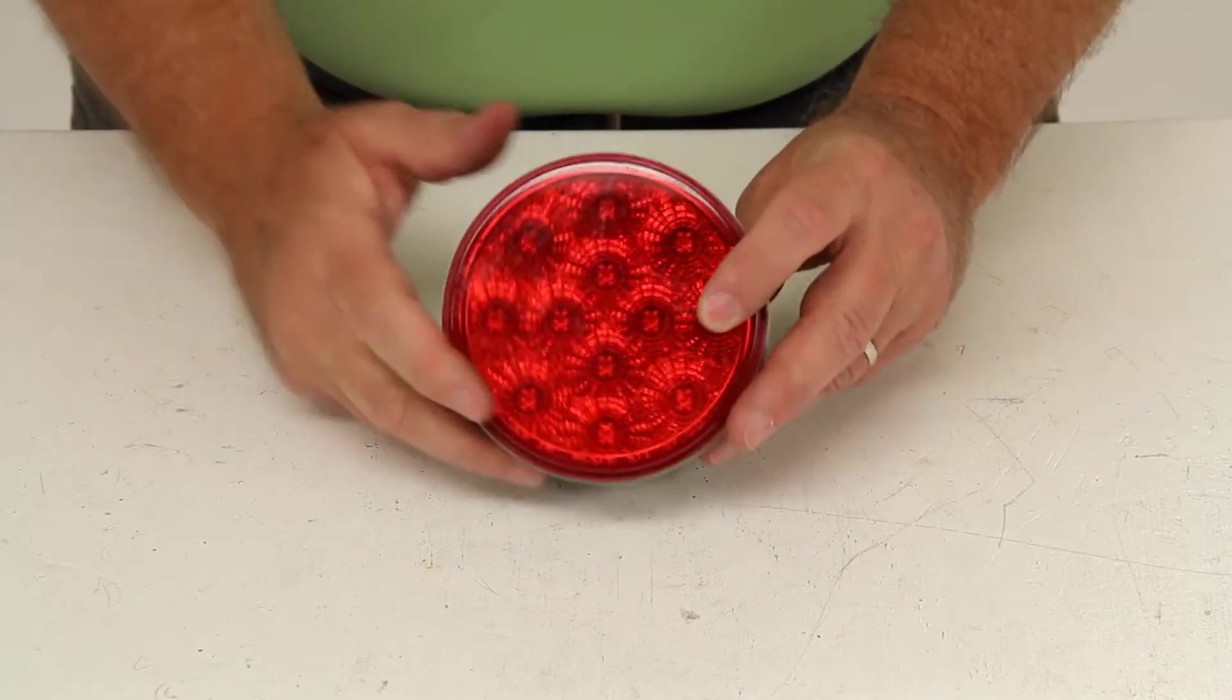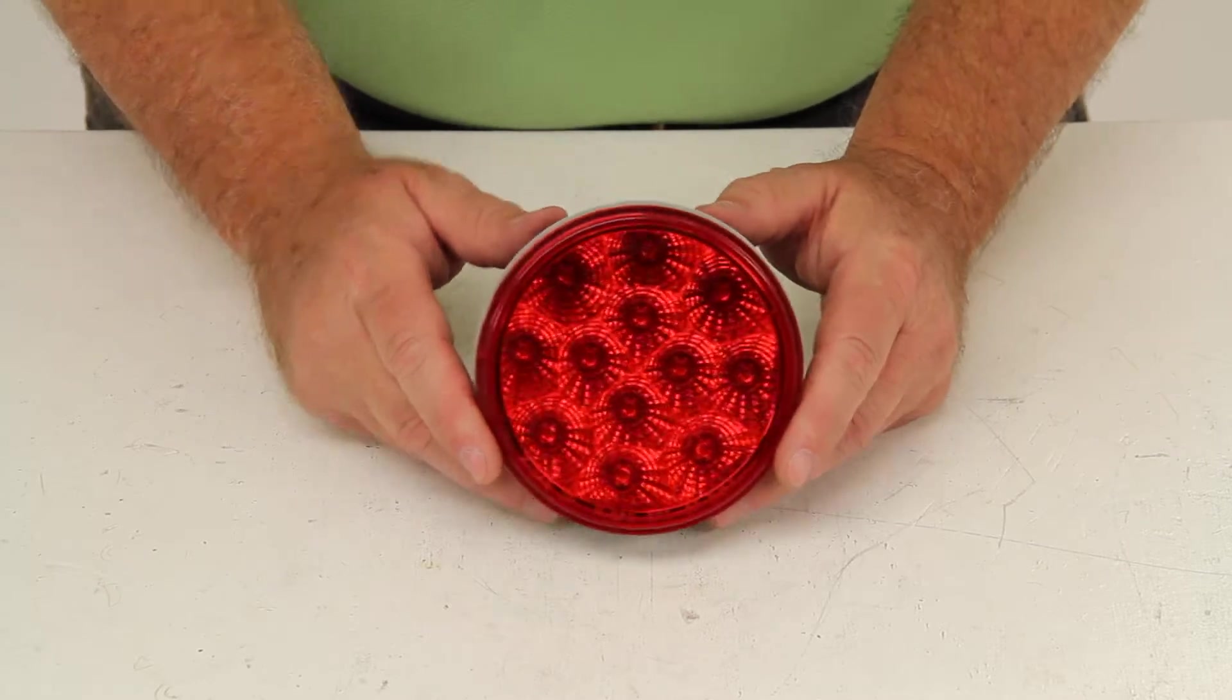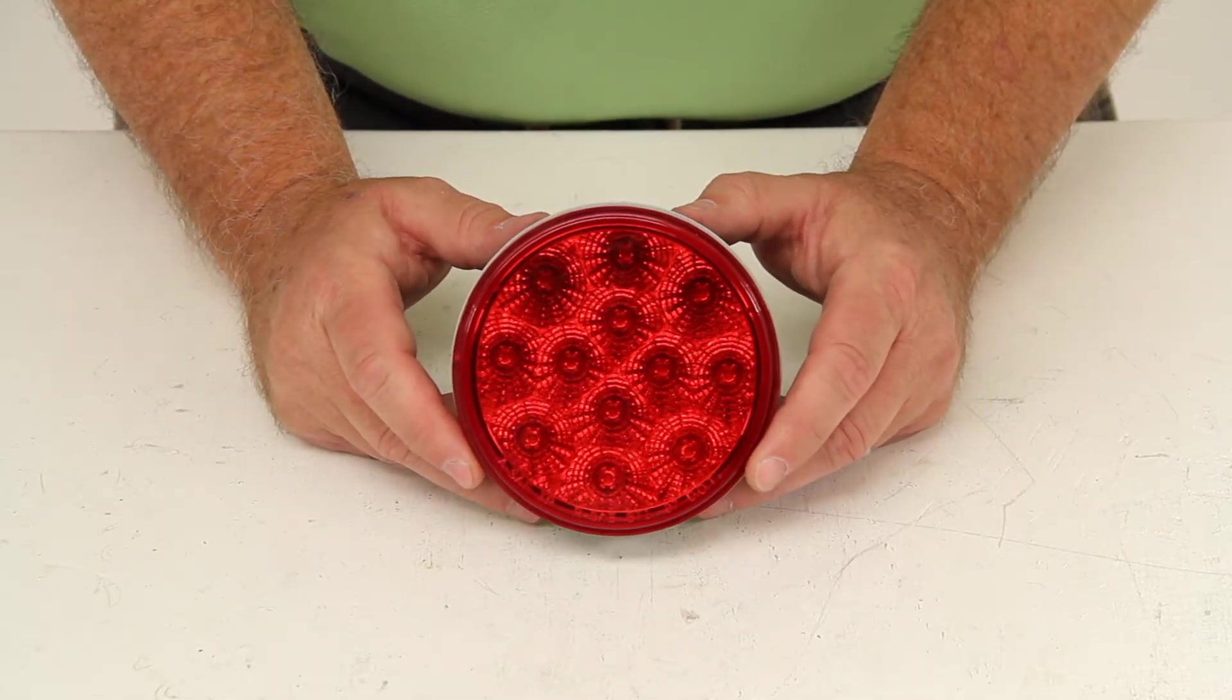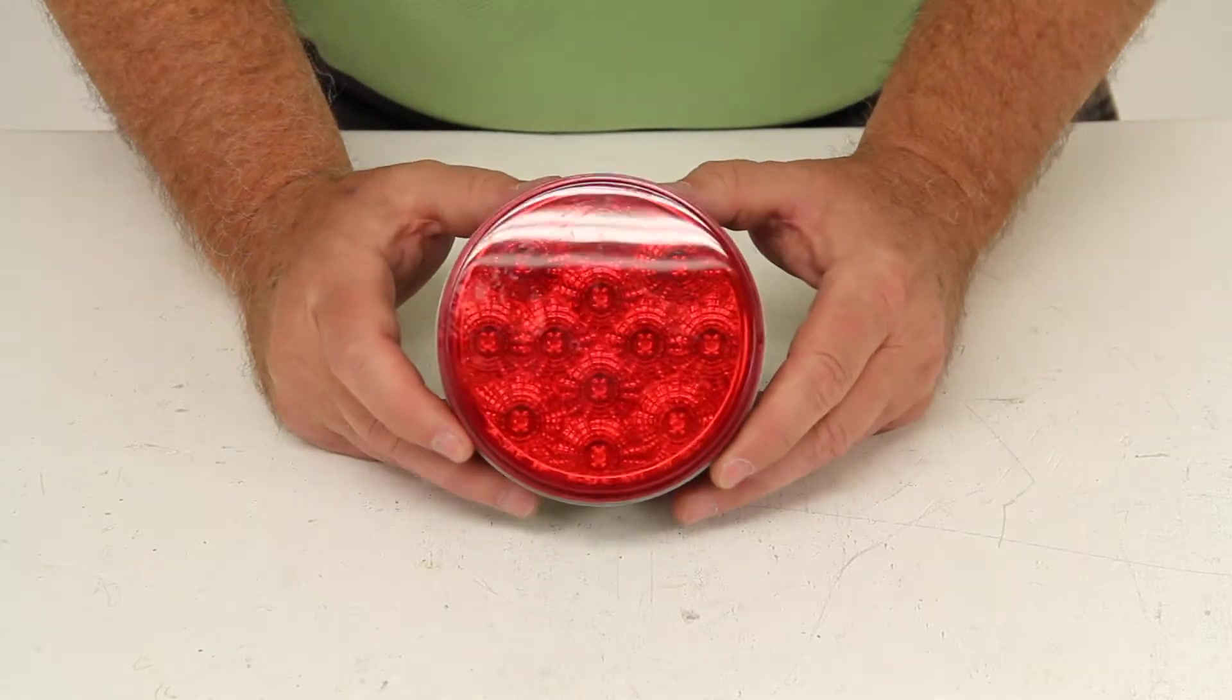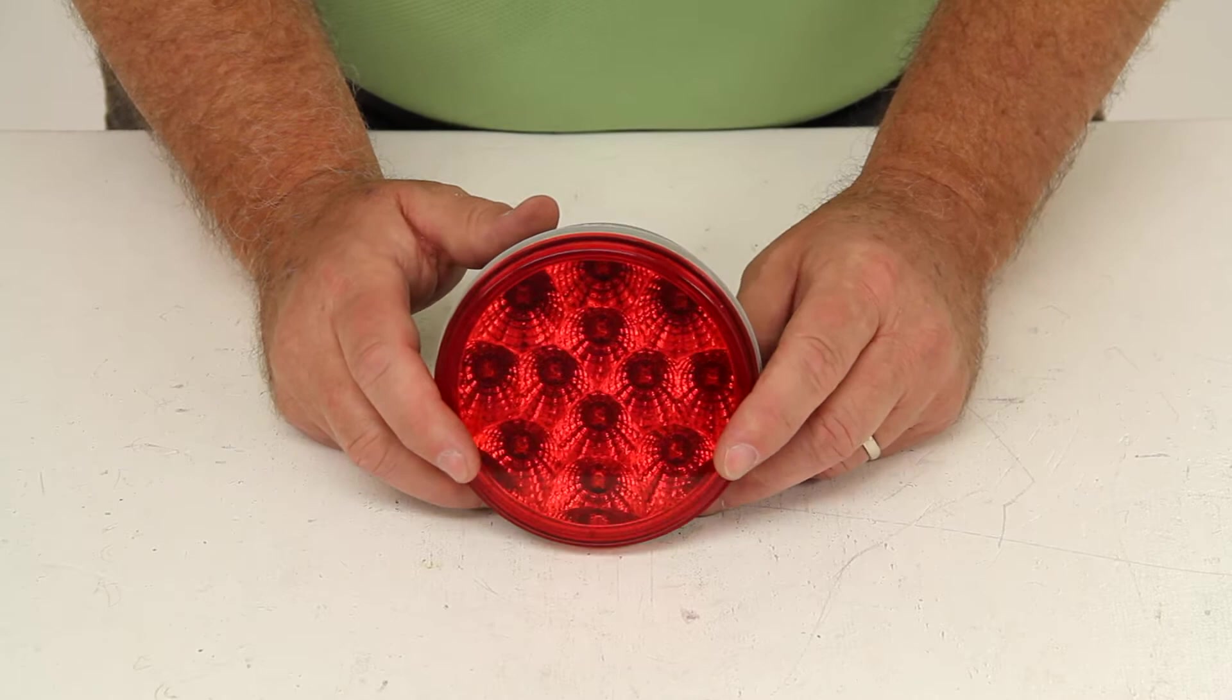Today we're going to review part number STL23RB. This is the Optronics Miroflex LED Trailer Stop, Turn, and Tail Light. This has 12 diodes and is a 4-inch round red light.